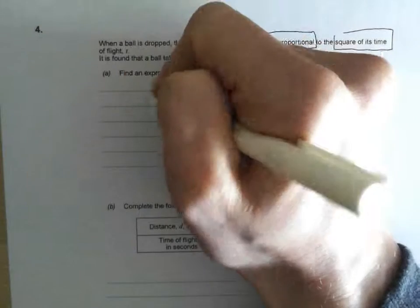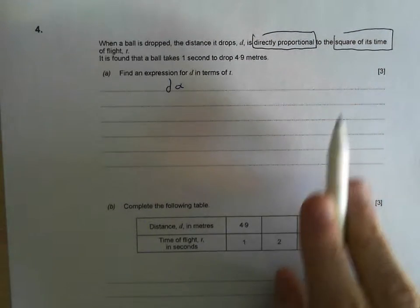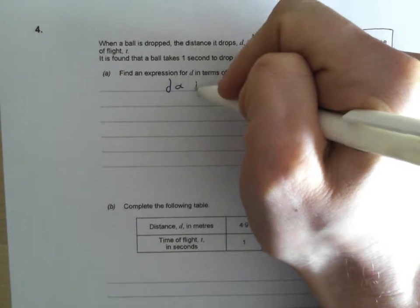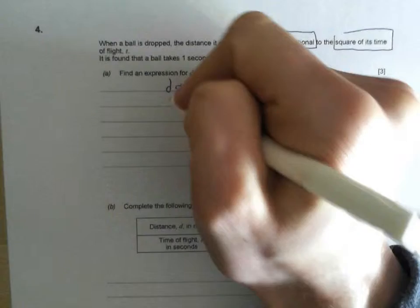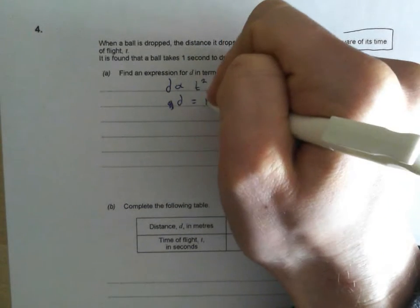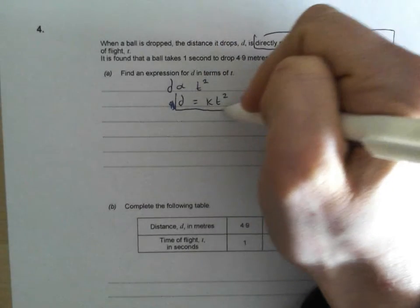Right, let's go to our routine. d proportional to, no, it's direct proportion so I don't need a 1 over, the square of its time. That's going to be t squared, the square of its time. Let's write that as an equation. d equals kt squared. Done. A little box around that, I'm going to be using that later on.